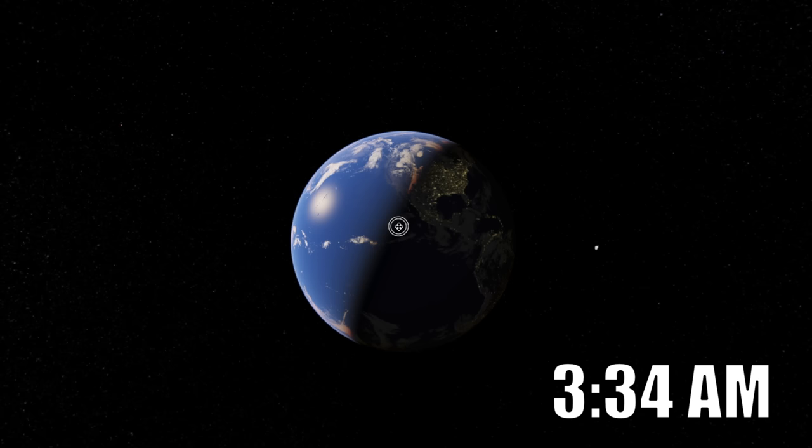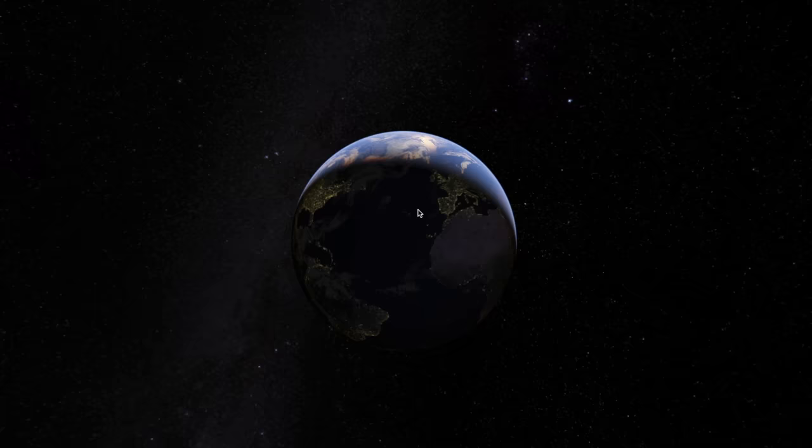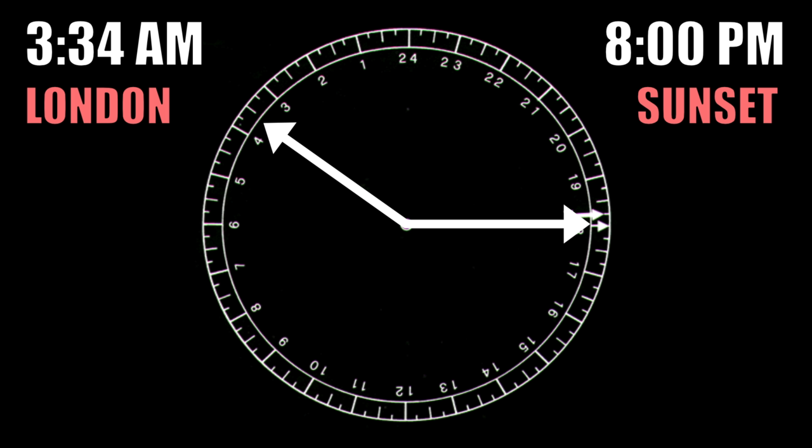Now brace yourself because admittedly this gets very confusing. Because the time of day is based off the rotation of the Earth, we could lay out a 24-hour clock with the two different times. Every hour is equal to 15 degrees.